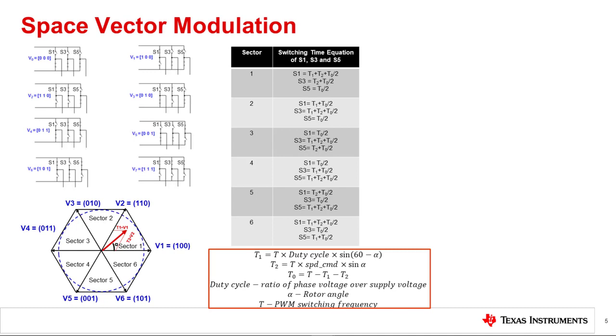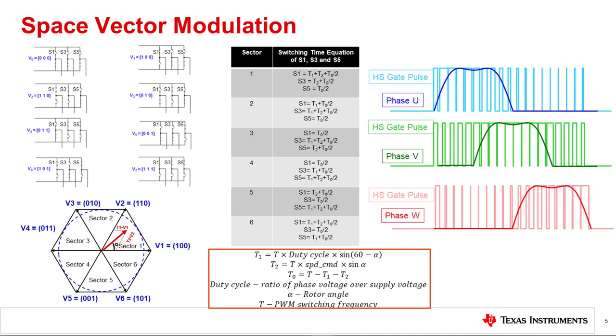Switching times T1, T2, and T0 of all the FETs in each sector are calculated using a sine lookup table and by taking rotor angle and duty cycle as inputs. With space vector modulation, we can generate sinusoidal voltages of any angle and magnitude. When we sweep the voltage vector from 0 degrees to 180 degrees, we expect to see three-phase pulse width modulated sinusoidal voltages as shown in the plots to the right.